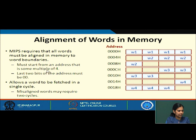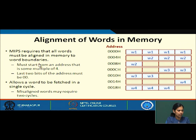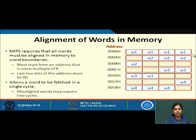All word addresses must start from a multiple of 4, so the last 2 bits of the address must be 00. Consider 4 — the last 2 bits are 0100; 8 is 1000, and so on for all others. This alignment allows a word to be fetched in a single cycle — we access the word and get the entire word in one cycle.